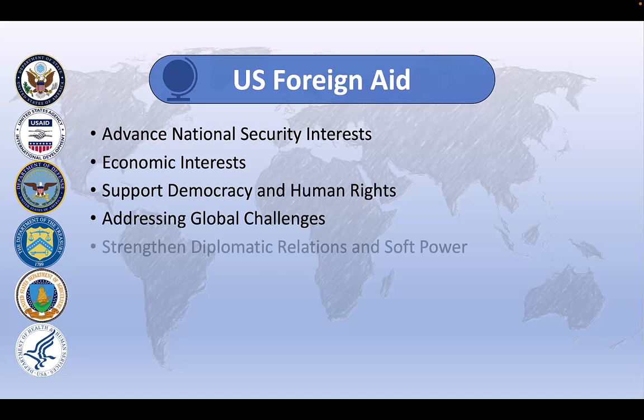Finally, foreign aid serves as a means to strengthen diplomatic relations, build alliances, and enhance American soft power influence. By providing assistance, the United States can cultivate goodwill, strengthen partnerships, and enhance its reputation as a global leader in the humanitarian era. Aid programs often involve collaboration with international organizations, local communities, and social groups, all of which can foster people-to-people connections and enhance mutual understanding.